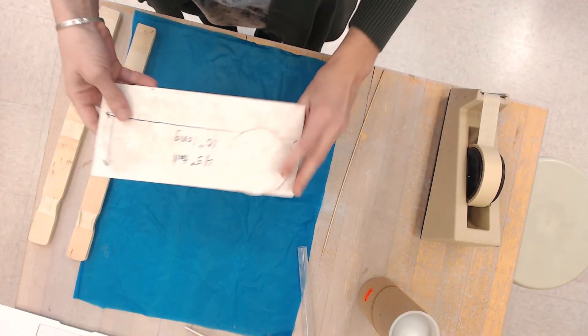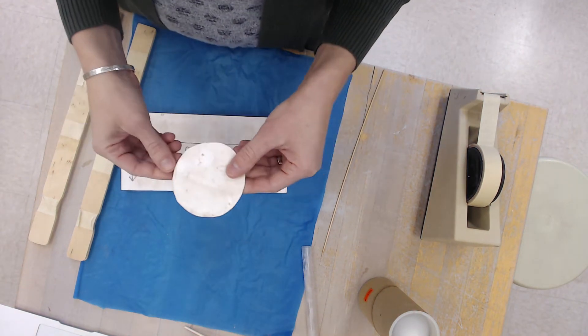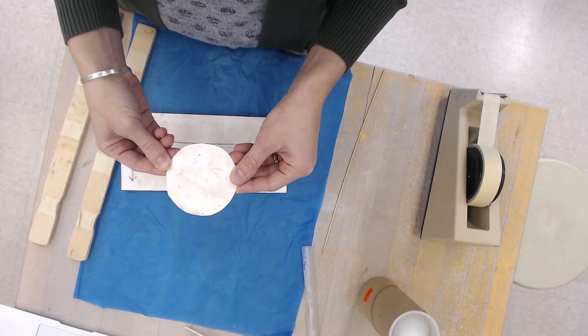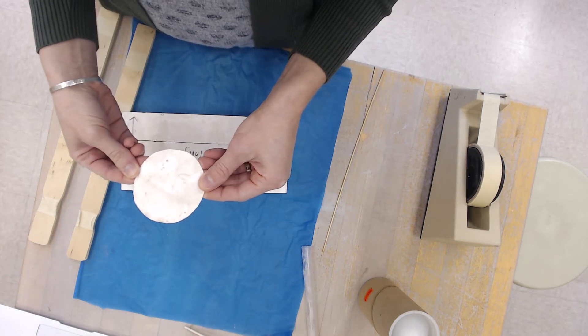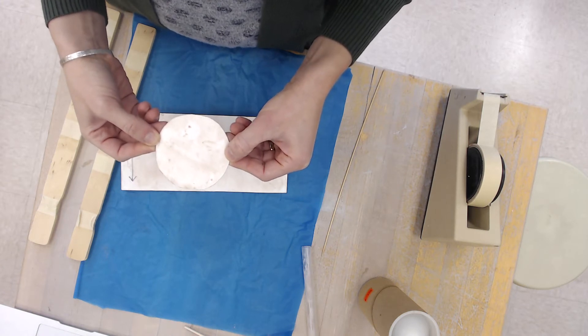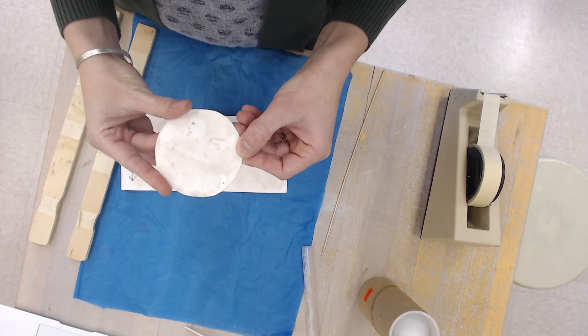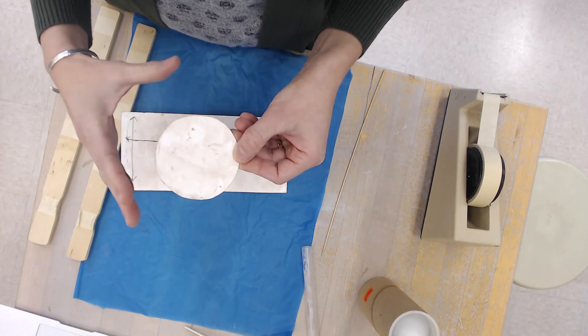You will also need your template that you have created. Just a reminder, the base piece is three inches wide in diameter, which is a little bit bigger than a condensed soup, but a little bit smaller than like a can of tuna. So you could certainly trace those to help you get that shape. So kind of go somewhere in between.